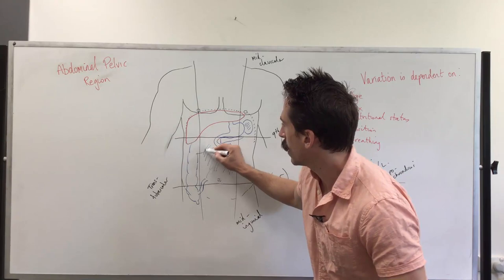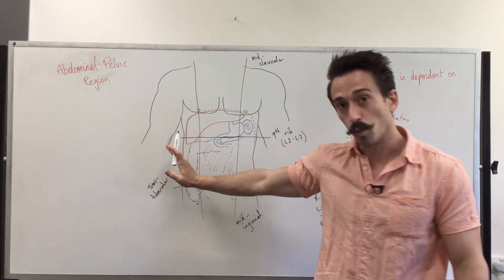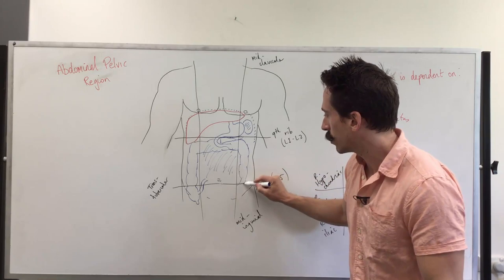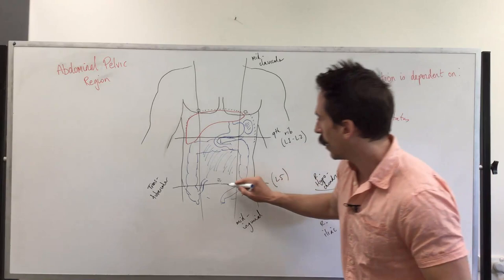Now we've got the large intestines coming up, and then it goes across. So you can see that the ascending colon is in the right lumbar, you've got the transverse colon sitting at the top of the umbilicus, and then you've got the descending colon sitting there at the left lumbar, and then it turns into the rectum and then the anus.